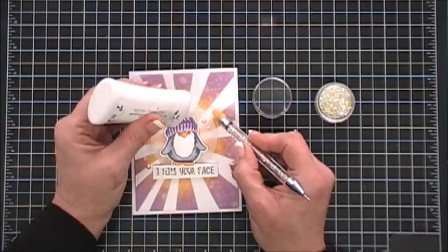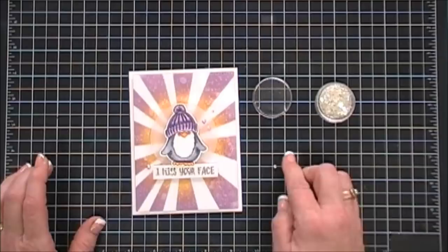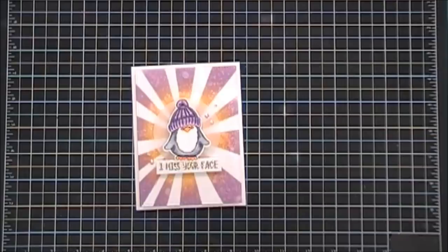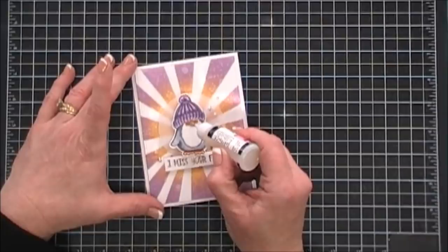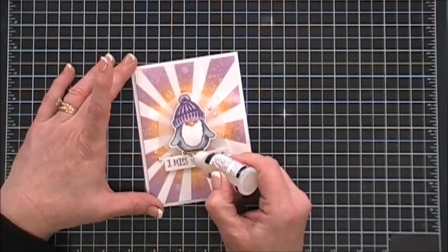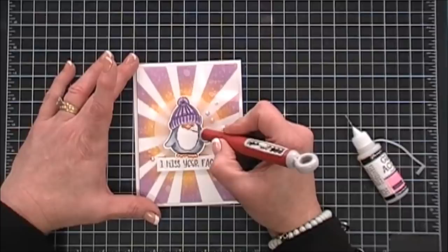Sometimes with the glossy accents, since I use a fine tip applicator, it turns like a rusty color so I always test it out on a piece of scratch paper first and then I can squeeze it on my project. But I'm going to go over his little bill and his little feet to give them a little bit of shine. And I'm taking out the air bubbles. That way it's just nice and glossy.